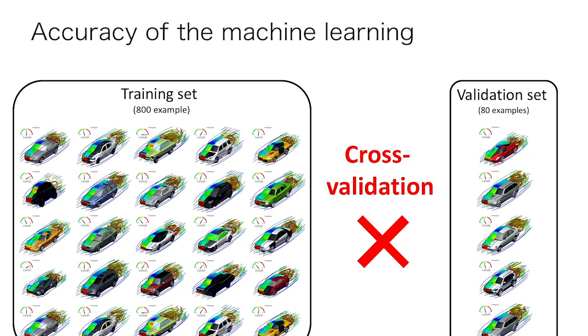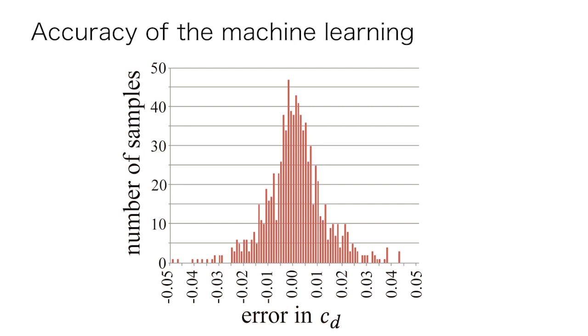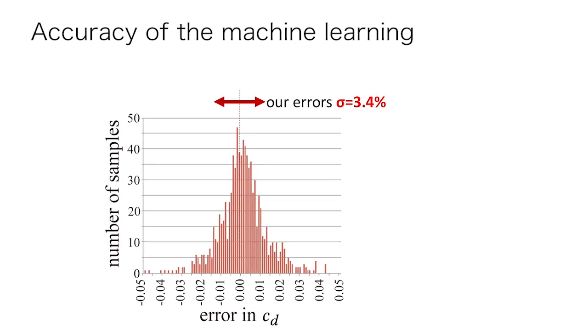We validated our approach using cross-validation. This is the error distribution from tenfold cross-validation. We achieved an accuracy of around 3.4% in drag coefficient prediction, which is comparable to the accuracy of regular wind tunnel experiments.